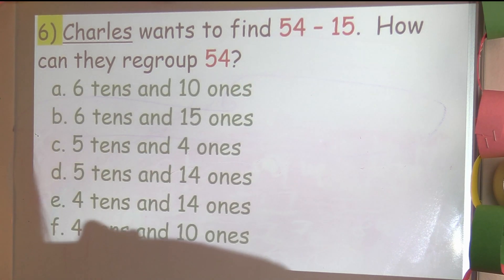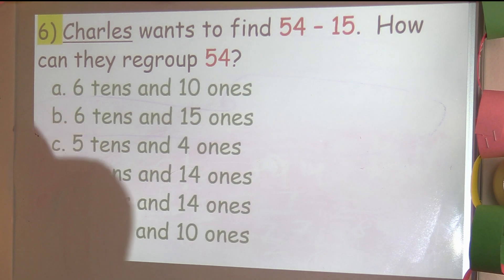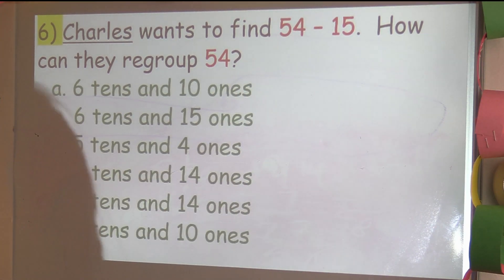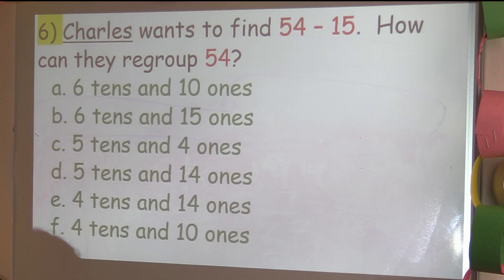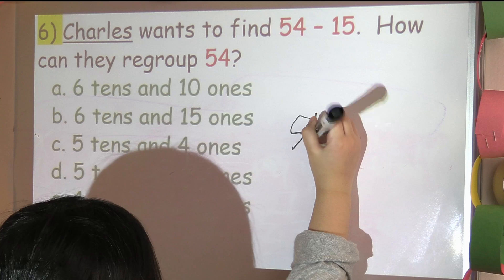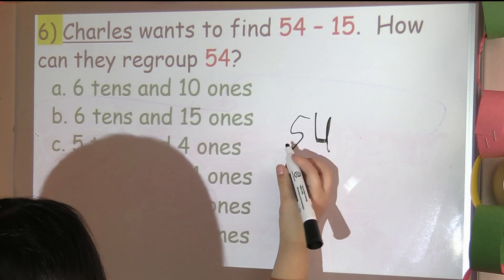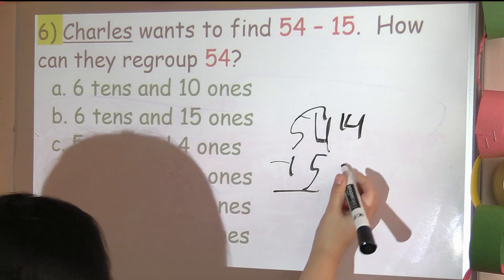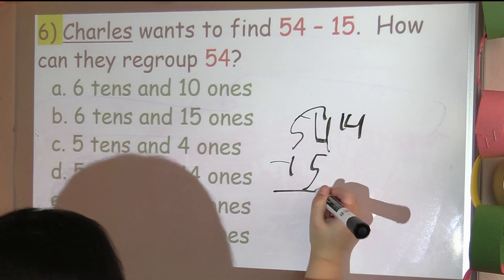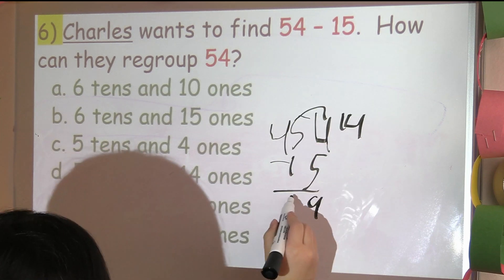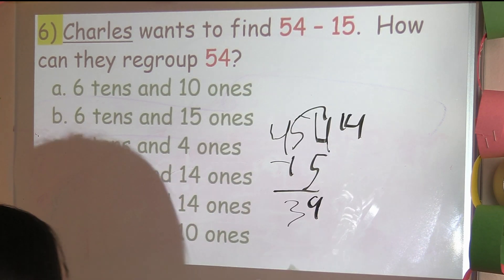Let's read the question. Charles wants to find 54 minus 15. How can they regroup 54? We're going to draw the column and put down 54 minus 15. So we have to regroup. Then 14 minus 5, so 14 minus 5 is 9. And then 5 becomes 4, so 4 minus 1 is 3. So it's 39.